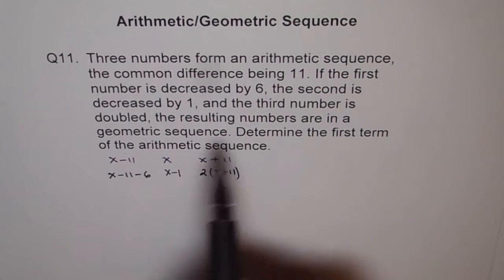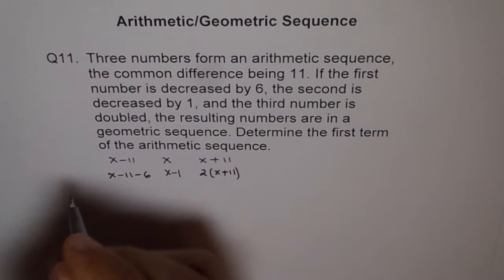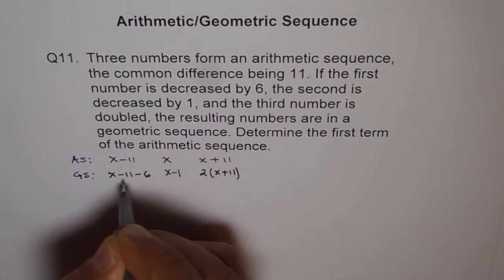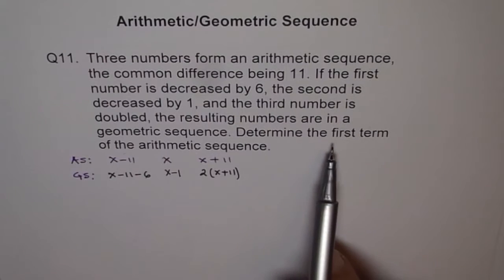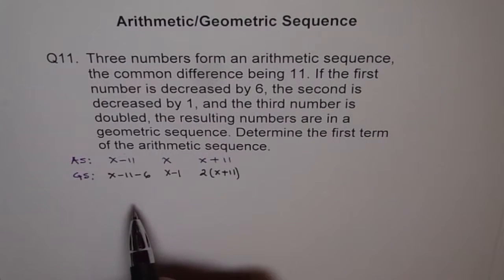The resulting numbers are in geometric sequence. So when we do all this, first we had arithmetic sequence, right? Now we have geometric sequence with this combination. We need to determine the first term of the arithmetic sequence. So we got now geometric sequence. So what is so special about geometric sequence? The thing is that the ratio of terms is constant. So that gives us one equation.